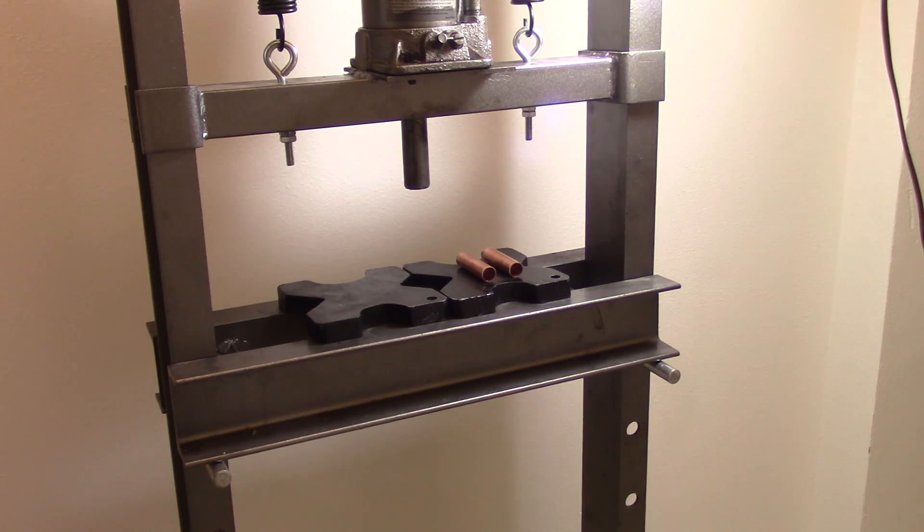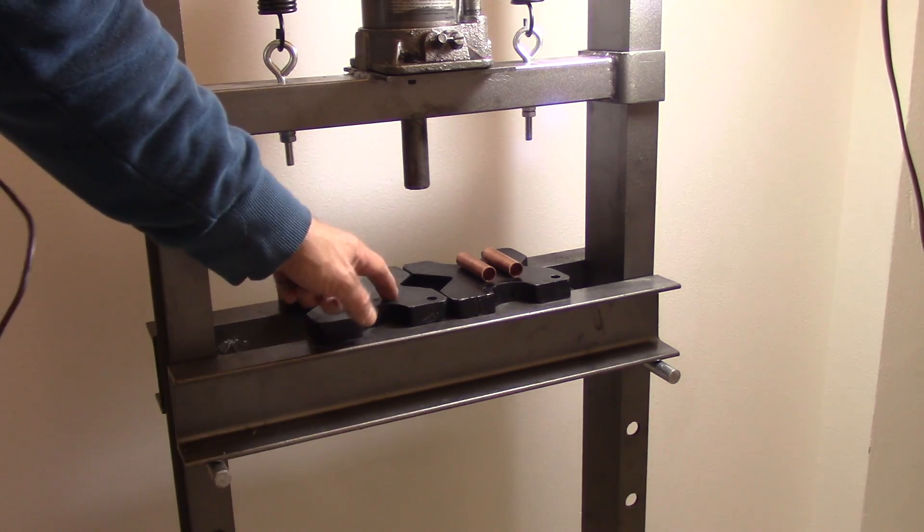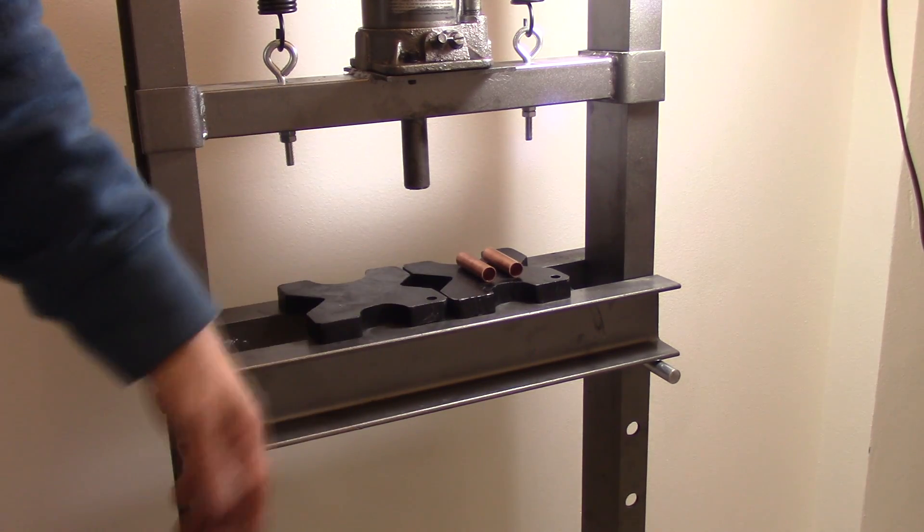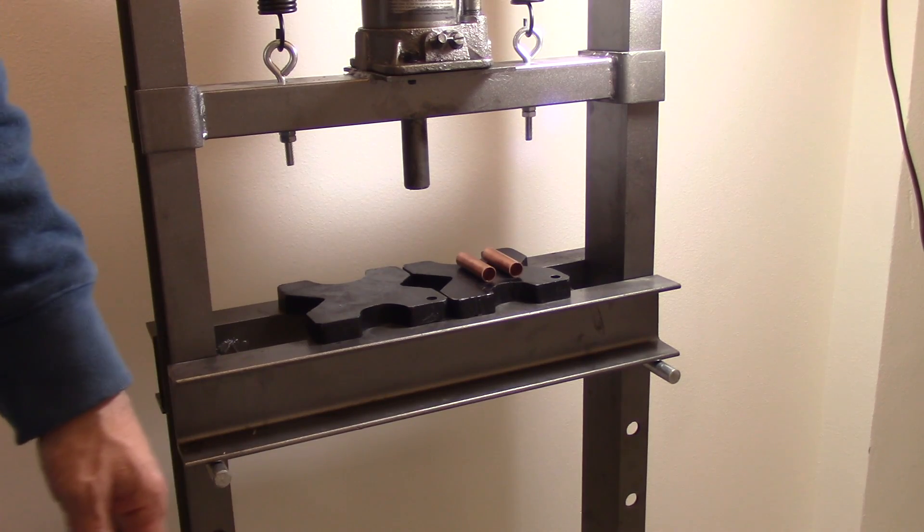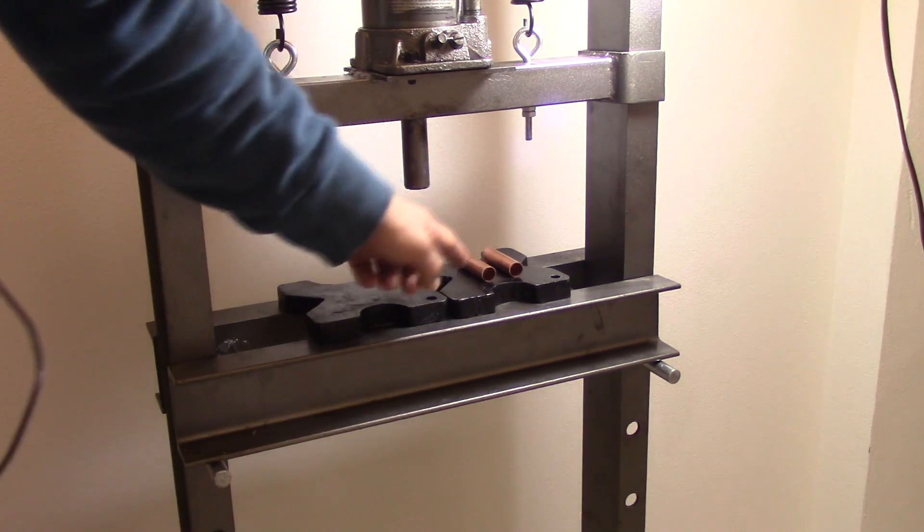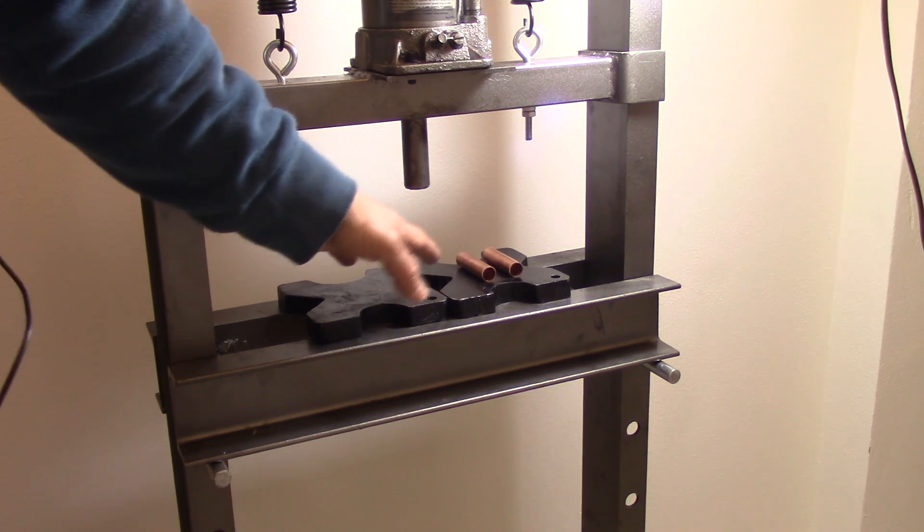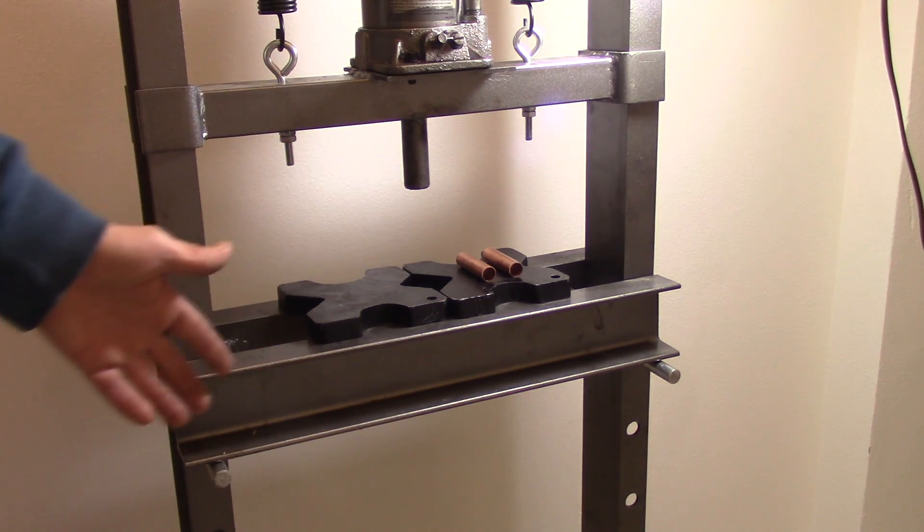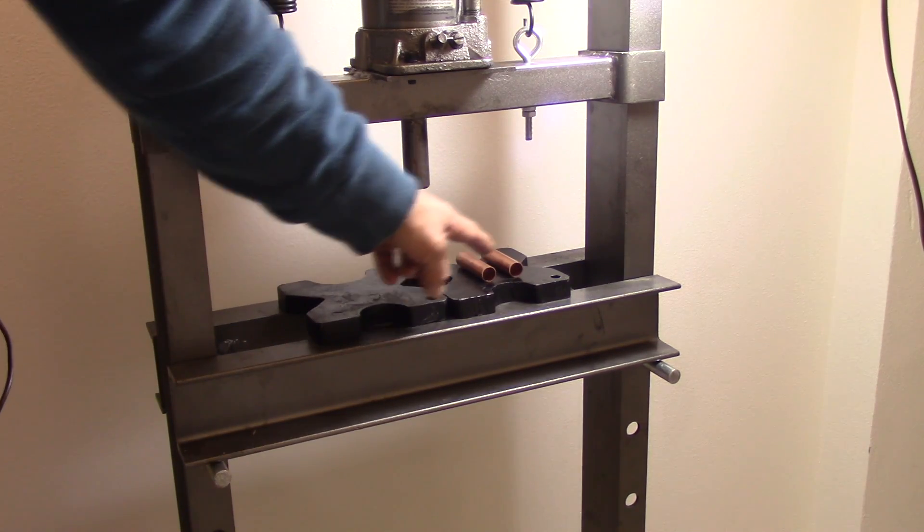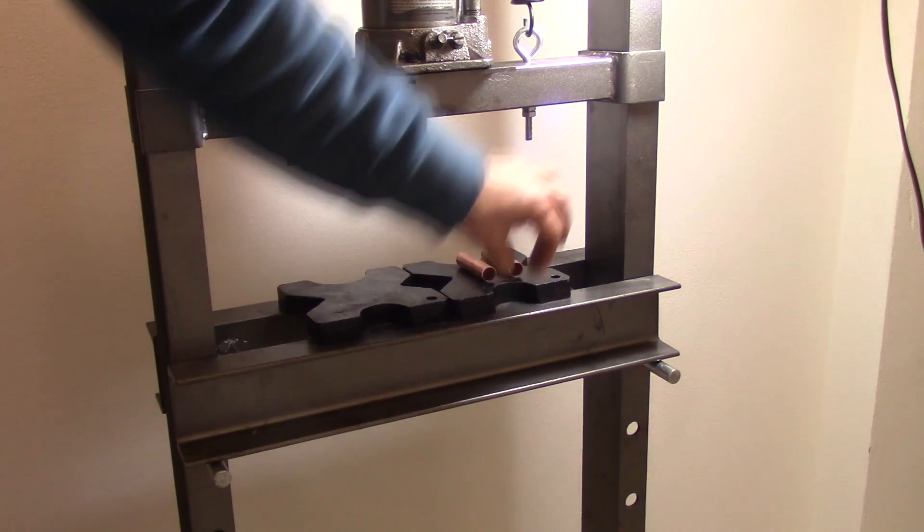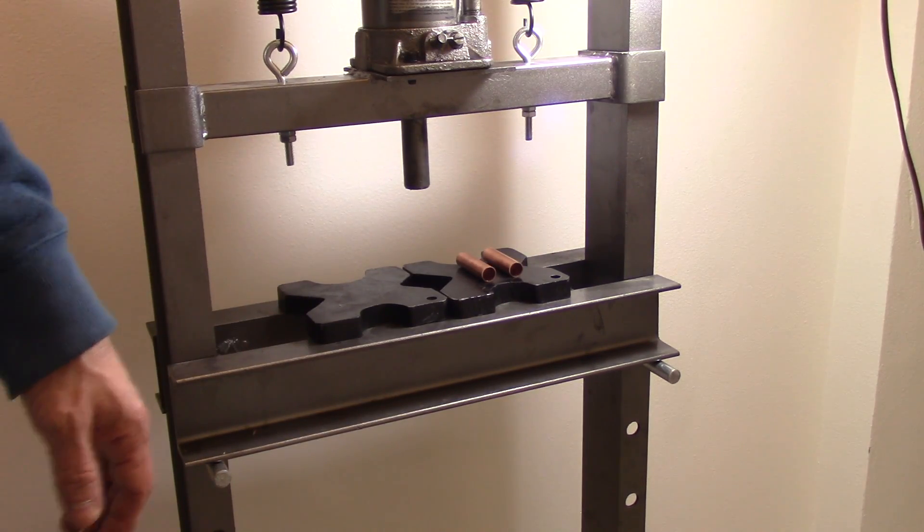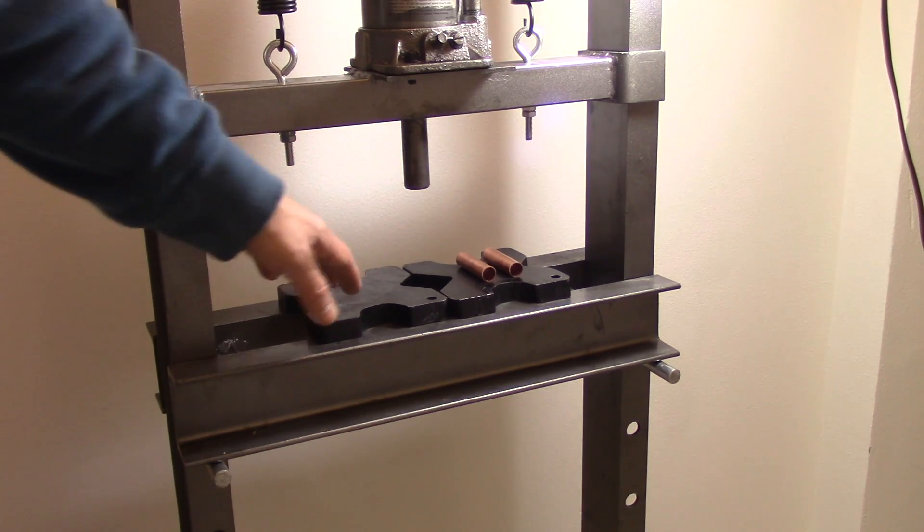Here we are looking at my press. And you can see that it came with these two substantial metal plates used for pressing metal. So I'm going to use them as the actual crushing points for these two pipes. And I'm going to do two at a time because it's more efficient, it's quicker. And this is how I did all of it.